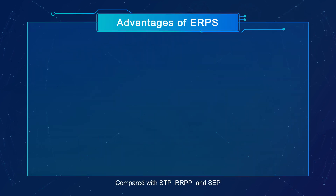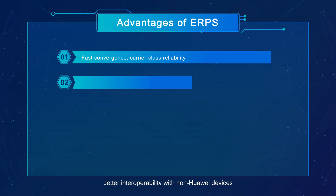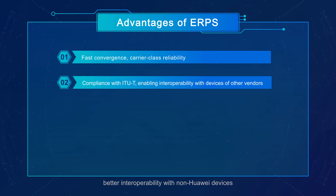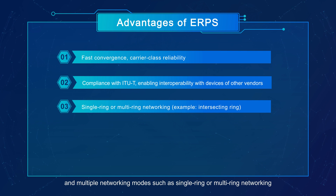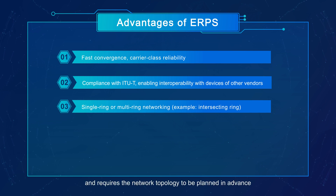Compared with STP, RRPP, and SEP, ERPS provides faster convergence, better interoperability with non-Huawei devices, and multiple networking modes, such as single ring or multi-ring networking. However, ERPS is more complex to configure and requires the network topology to be planned in advance.